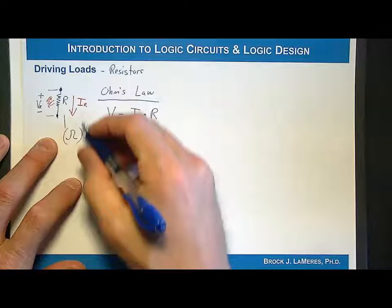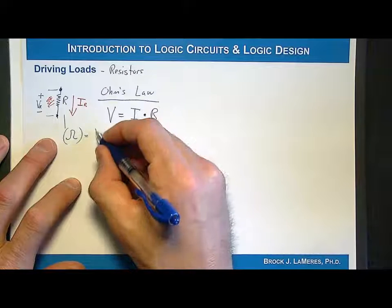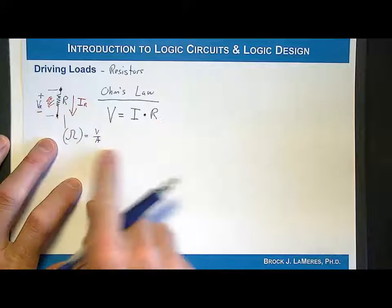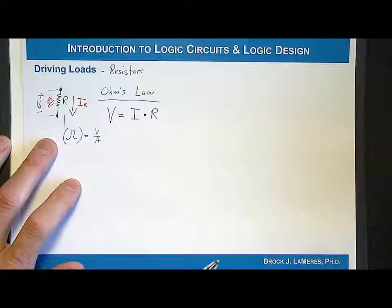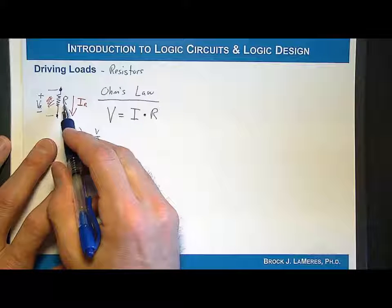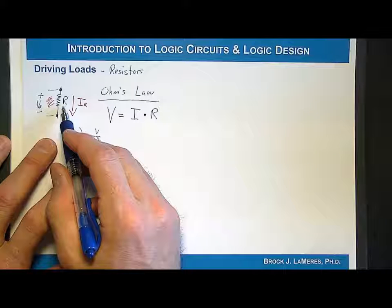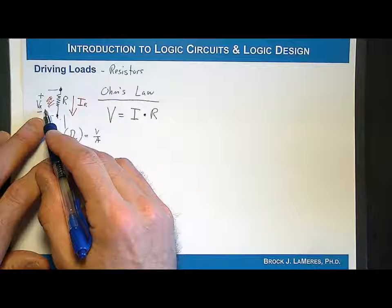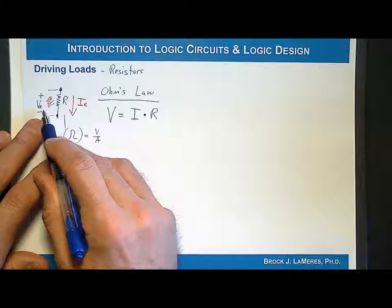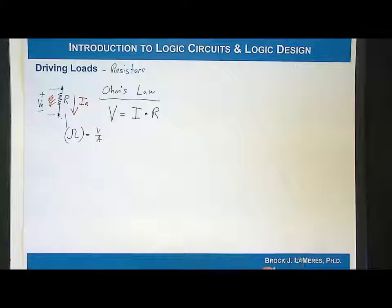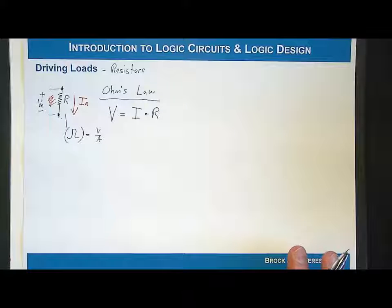If you break it down, resistance is going to be volts per amp. So if you know the resistance value — which is easy to measure and usually given — and you know the voltage, you can determine how much current is flowing through it. Or if you know the current, you can determine the voltage. We can use Ohm's Law to find the current when driving a resistor with a digital gate.